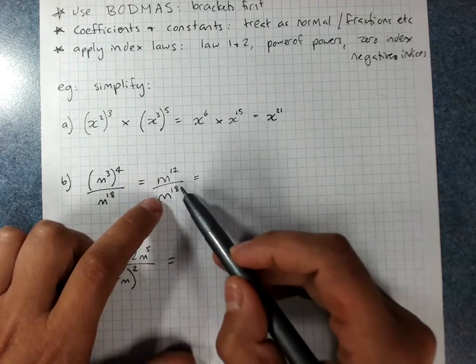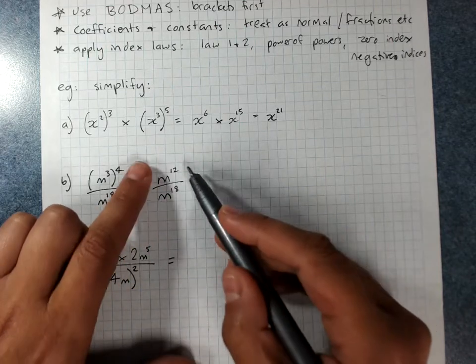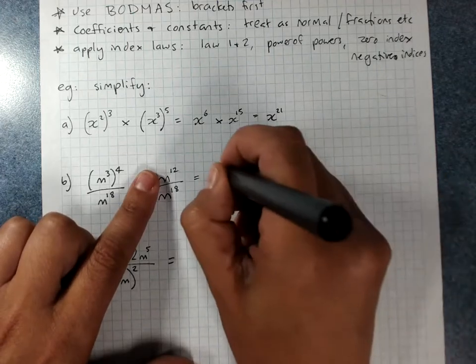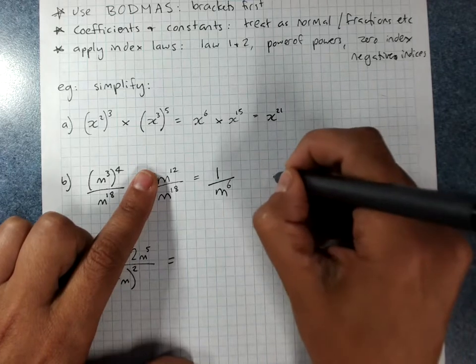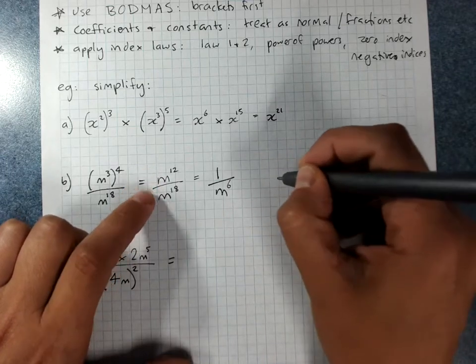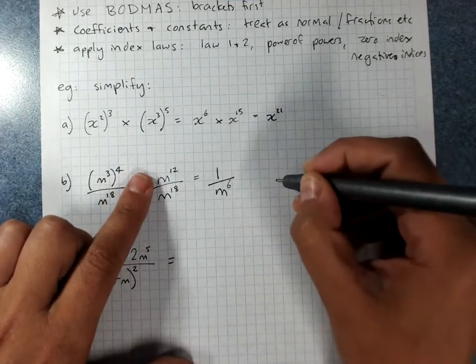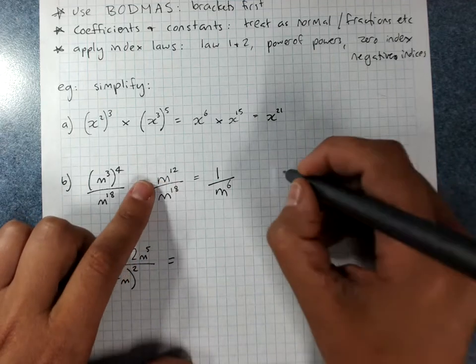Because I'm left with more m's on the bottom, this will have to be 1 over m to the power of 6. If you did it separately, if you did it 12 minus 18, because m12 divided by m18, you would subtract the powers,